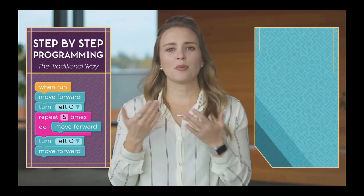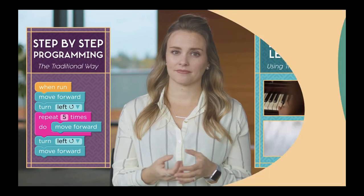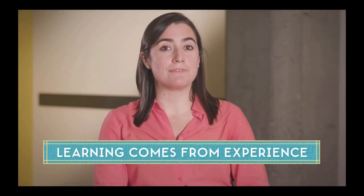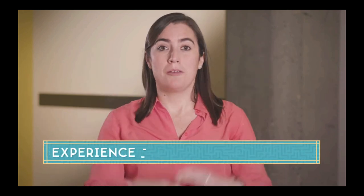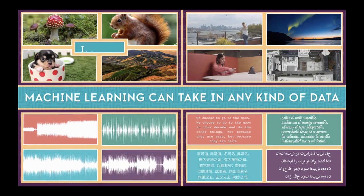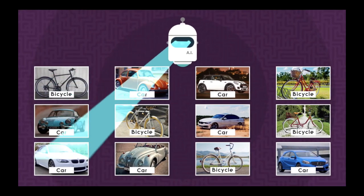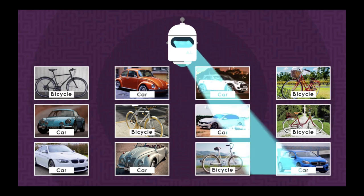What's so exciting is that machine learning is a completely different way to program a computer than what we've ever done before. Instead of programming a computer step by step, you can program it to learn just like you learn — through trial and error and lots of practice. Learning comes from experience, and that's true for machine learning too. In this case, experience means lots and lots of data. Machine learning can take in any kind of data — images, video, audio, or text — and begin to recognize patterns in that data.